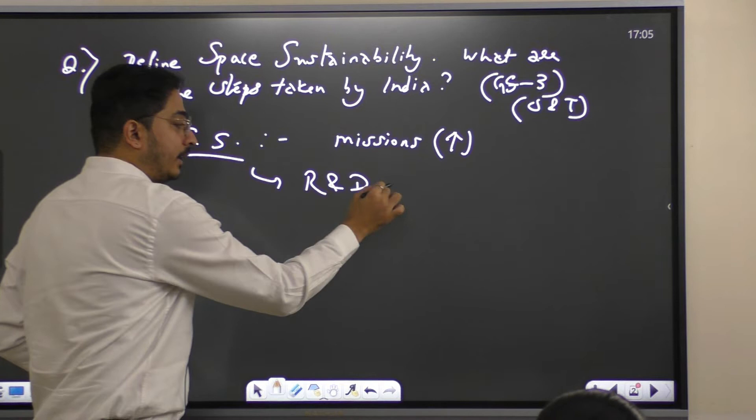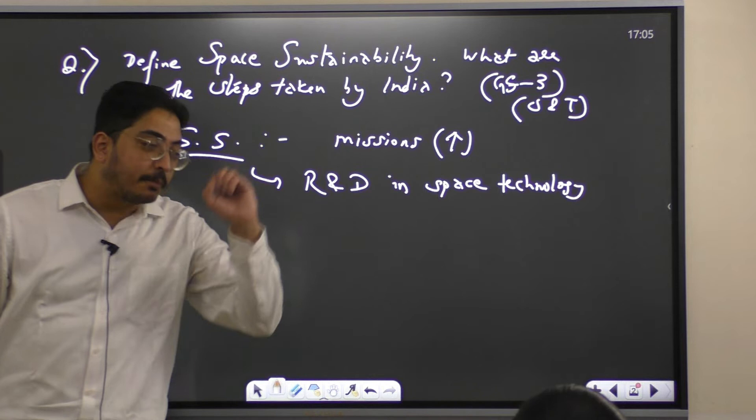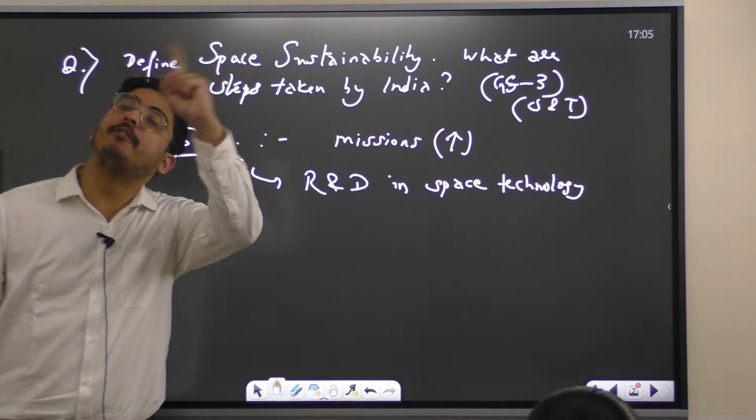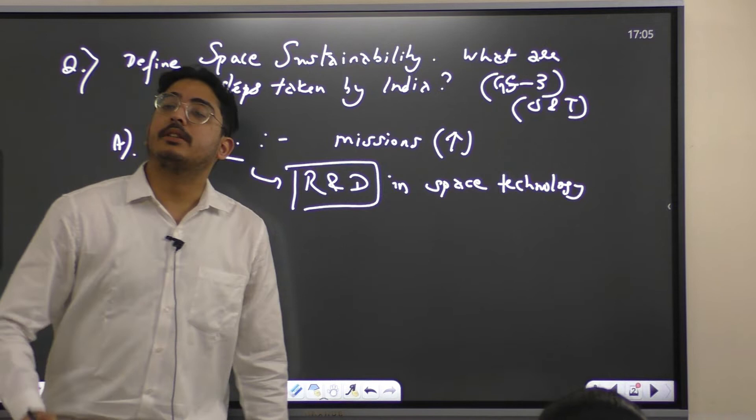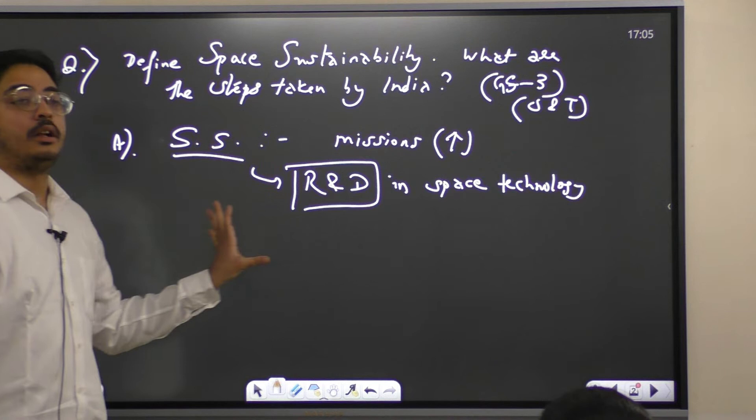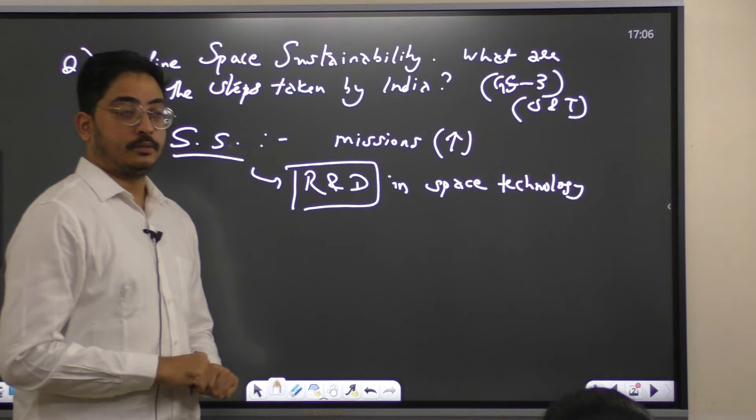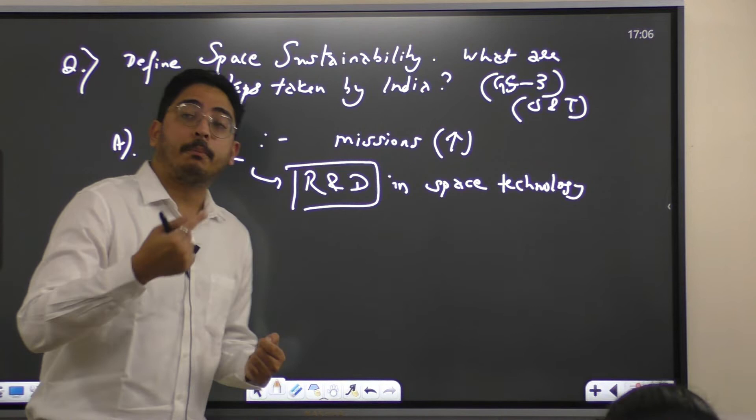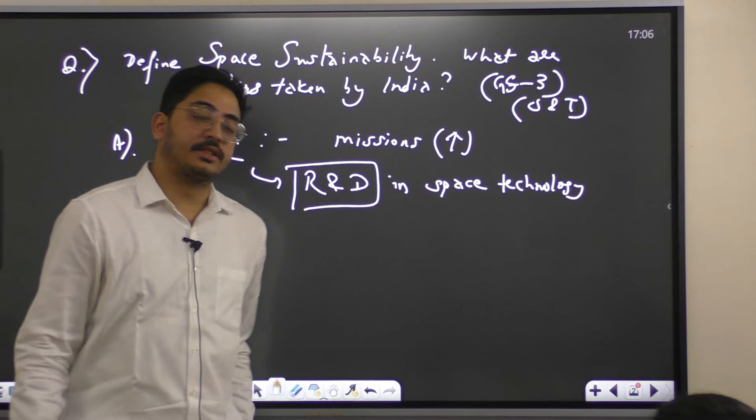How to have proper research and development in space technology so that the space debris issues all get solved? Space debris hota hai when the lifetime ends. So we have to properly do the research and development in space technology to solve this orbital crowding. Satellites have increased in number. So how we do that? That total phenomenon is called space sustainability.